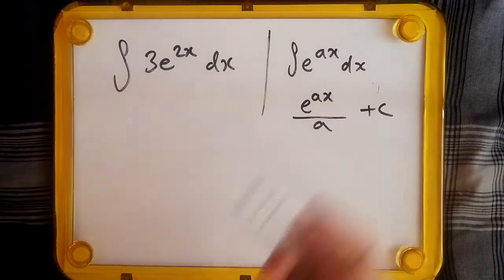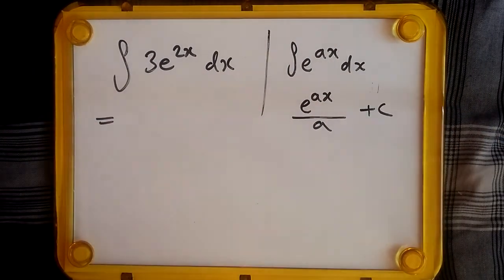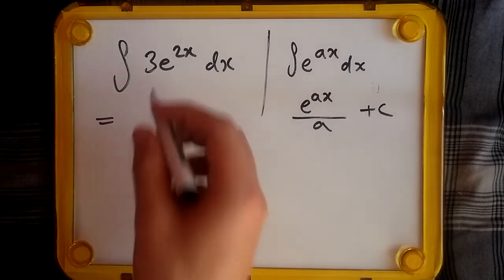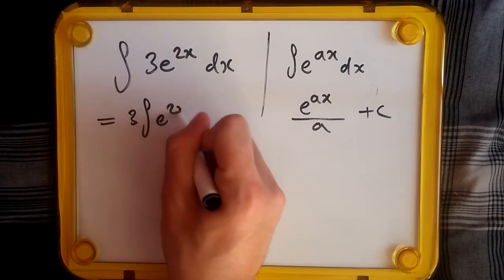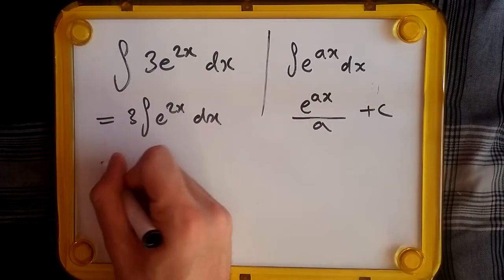Likewise here. Now to actually integrate this problem, what do we have? We could ignore the three, so really it's just integrating like this, because it's a constant, goes outside. So integrating e^2x...